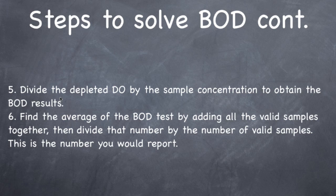Step 5: divide the depleted DO — take your initial, subtract the final, and divide that number by the sample concentration to obtain the BOD results. That number will be in milligrams per liter. Then find the average of the BOD test by adding all the valid samples together and dividing by the number of valid samples. So you'd add sample 1 plus sample 2 plus sample 3 and divide by 3. This is the number you would report to the state. So now we're actually going to solve a BOD problem.